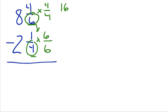If you do it that way, you're going to come up with 16/24, multiplying straight across. And here 1 times 6 is 6, 4 times 6 is 24. We do have a common denominator. 16/24 minus 6/24 is 10/24. And 8 minus 2 is 6.